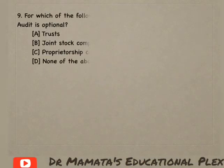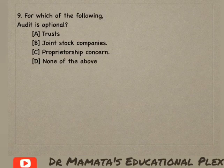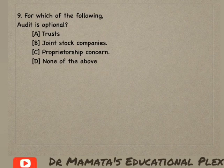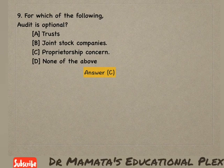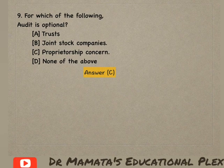Next question: For which of the following is audit optional? Trusts, joint stock companies, proprietorship concern, or none of the above? In mein se kis ke liye auditing optional hai? Trust aur joint stock companies ke liye audit compulsory hota hai, lekin proprietorship concern ke liye auditing optional hai. So option C is the correct answer.